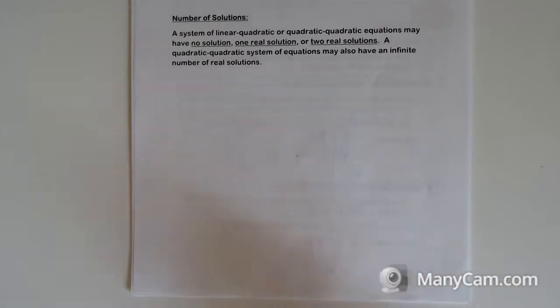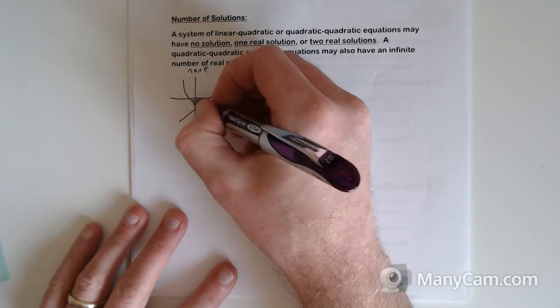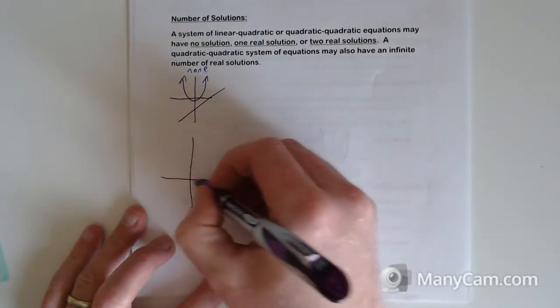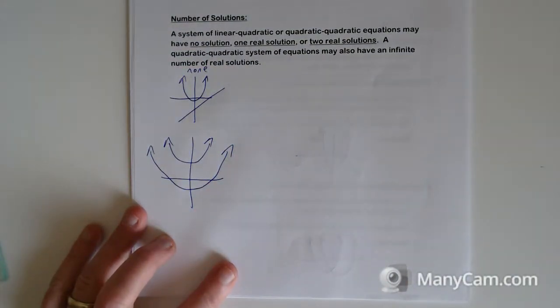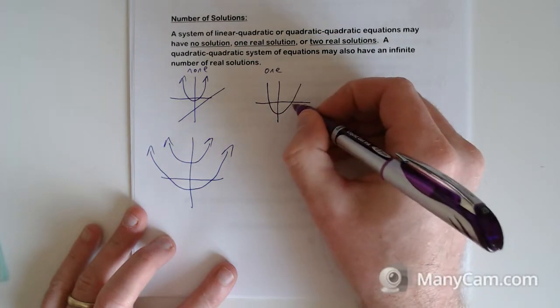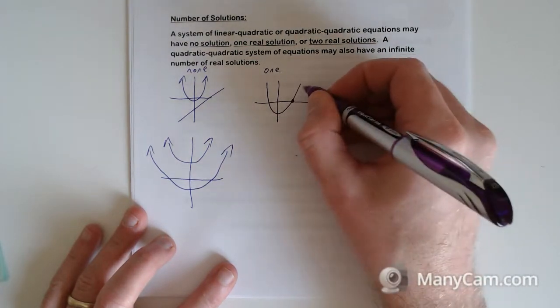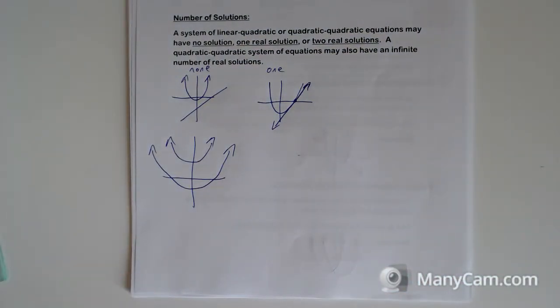Number of solutions: a system of linear-quadratic or quadratic-quadratic equations may have no solution, one real solution, or two real solutions. A quadratic-quadratic system may also have an infinite number of solutions. No solution could look like this, where they don't touch. One solution would be when it touches just at a tangent. It is possible for a line to actually touch the curve only at one point.